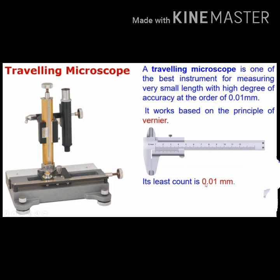A traveling microscope is one of the best instruments for measuring very small lengths with a high degree of accuracy, at the order of 0.01 mm. It works based on the principle of vernier. The least count is 0.01 mm.